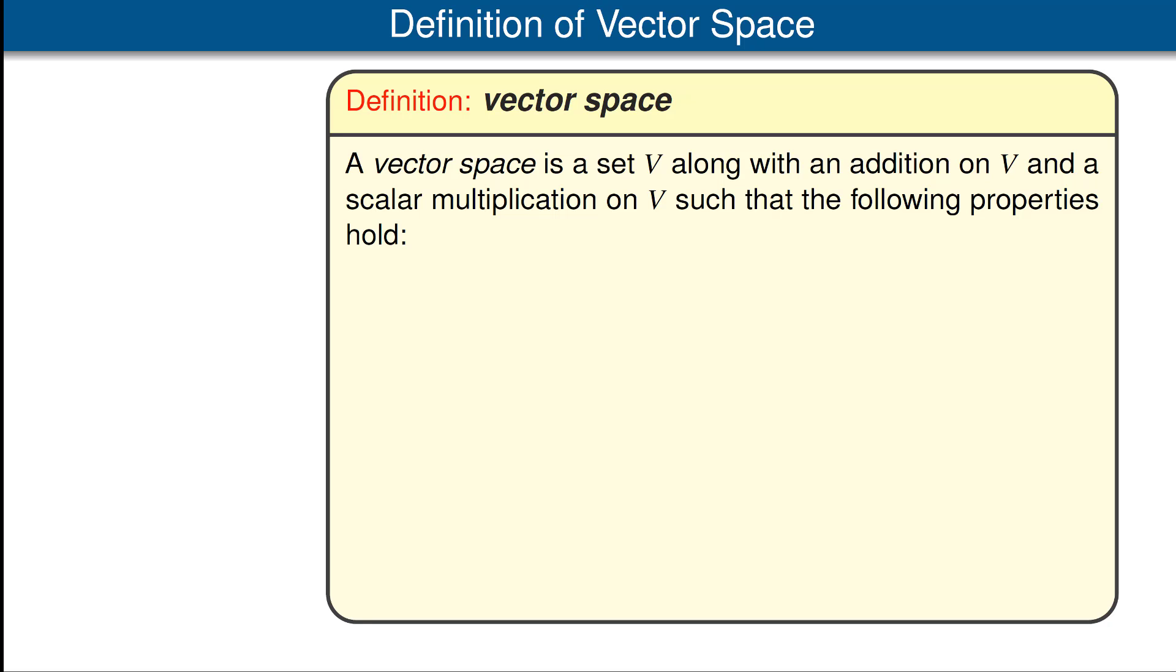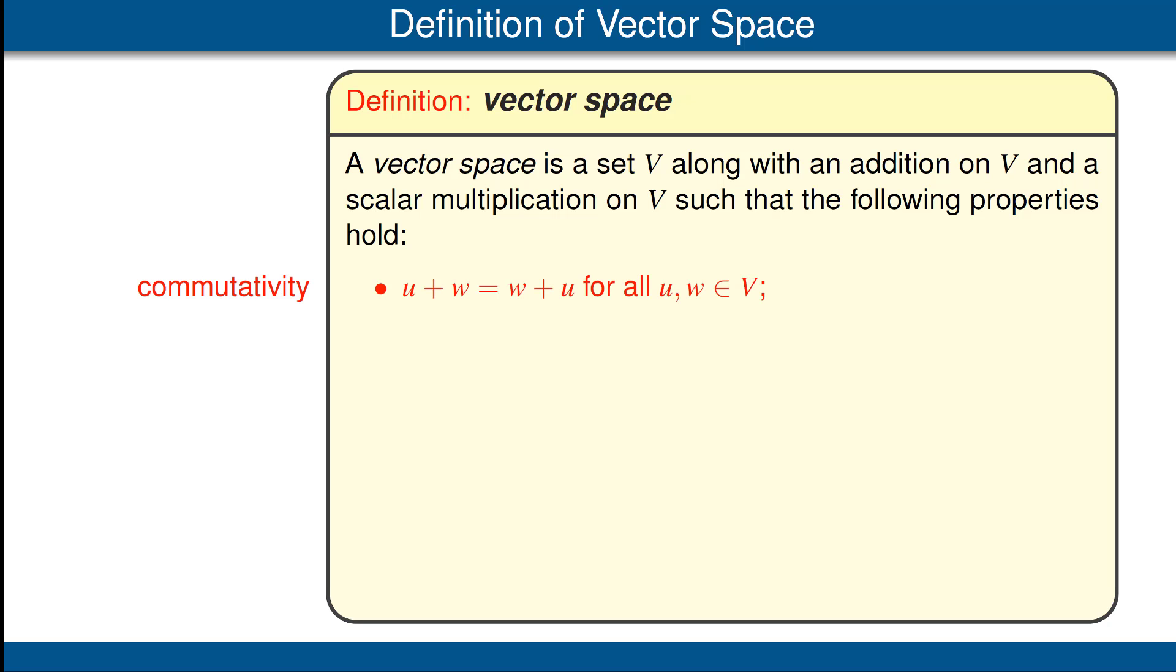Now we are ready to give the formal definition of a vector space. A vector space is a set V, along with an addition on V and a scalar multiplication on V, such that the following properties hold. These properties are modeled on the corresponding properties of F^n. The first property is commutativity of addition, which means that the order in which we add elements does not matter. Next, we have associativity, first for addition, which means the grouping does not matter, and second for scalar multiplication, where we have two scalars and one element of V, and we can do the operations in either order, as indicated, and get the same result.